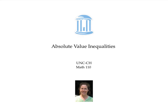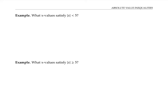This video is about solving inequalities that have absolute value signs in them. Let's look at the inequality absolute value of x is less than five on the number line. Thinking of absolute value as distance, this means that the distance between x and zero is less than five units.